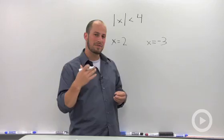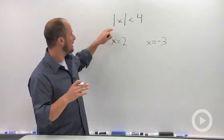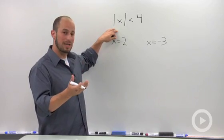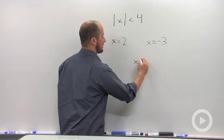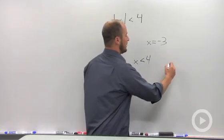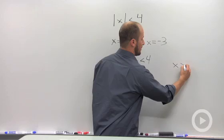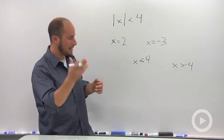So whenever we're dealing with absolute values less than, the way I like to remember this is we actually have to make this into two equations, one being x is less than 4 and the other one is x is greater than negative 4. Again, the opposite sign and the opposite number.